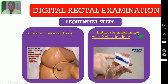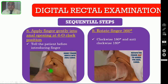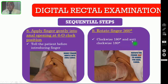Then you have to lubricate your index finger adequately with the jelly — as you can see in this picture. Number eight: apply the finger gently into the anal opening beginning at the six o'clock position. You should not introduce your finger all of a sudden. Before introducing your finger into the anal canal, tell the patient what you are going to do. Then gently introduce it and rotate your finger 360 degrees — 180 degrees clockwise and 180 degrees anti-clockwise.